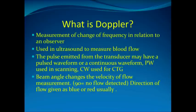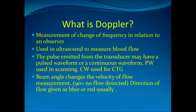A little recap from the science: what is Doppler? It's a measurement of change of frequency in relation to an observer. It's used in ultrasound to measure blood flow. The pulse emitted from the transducer may have a pulsed waveform or a continuous waveform. Pulsed wave is used in scanning whereas continuous waveform is used mostly for CTGs. The direction of flow is given as blue or red usually.